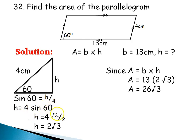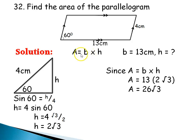If your answers are in decimal form, use the four-figure table to get the value of sin 60. Using special angles, sin 60 is √3/2. So H = 4 times √3/2; simplifying gives H = 2√3. Now substituting into the area formula: base times height equals 13 times 2√3, which gives 26√3. That is the area of the parallelogram.